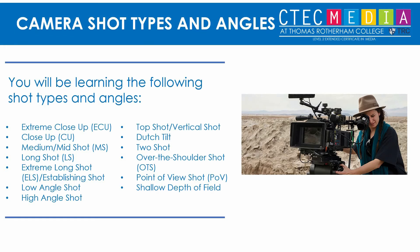There are loads of different shot types we could look at, but for the qualification you're doing you don't need to know all of them. I've narrowed it down to this list: extreme close-up, close-up, medium shot, long shot, extreme long shot or establishing shot, low angle shot, high angle shot, top shot or vertical shot, dutch tilt, two shot, over the shoulder shot, point of view shot, and shallow depth of field.